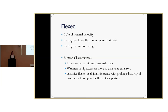They're excessively flexed at all joints in stance with prolonged activity of the quadriceps to help support the knee-flexed posture. Their quadriceps are constantly firing because they're in that flexed posture — they never reach the extended point where they can reduce that activation. So you may strengthen both groups, but more so the hip extensors than the knee extensors.